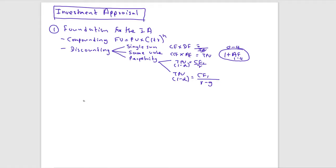Sometimes the first cash flows only start in year three — nothing in years one or two. In that case, take the annuity factor from year one to five, then remove the annuity factor of years one to two. The result is the annuity factor from year three to year five, which you use for the calculation.